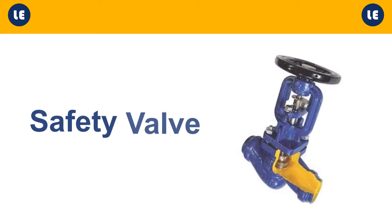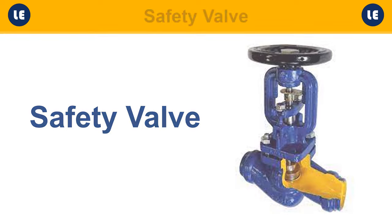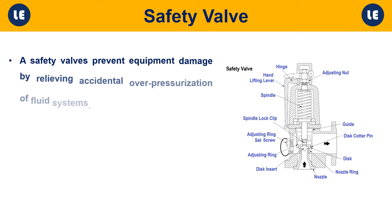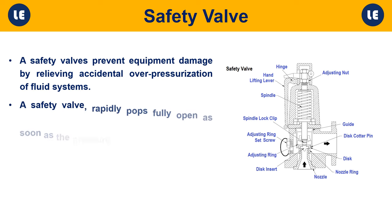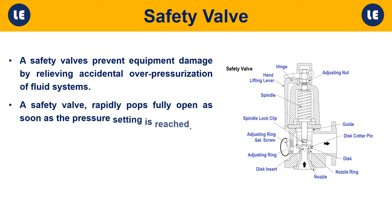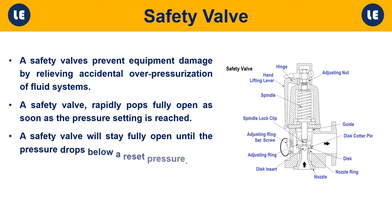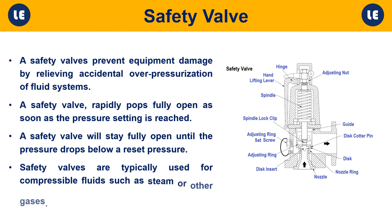Safety valve: A safety valve prevents equipment damage by relieving accidental over-pressurization of fluid systems. Unlike a relief valve, a safety valve rapidly pops fully open as soon as the pressure setting is reached, and will stay fully open until the pressure drops below a reset pressure. Safety valves are typically used for compressible fluids such as steam or other gases.